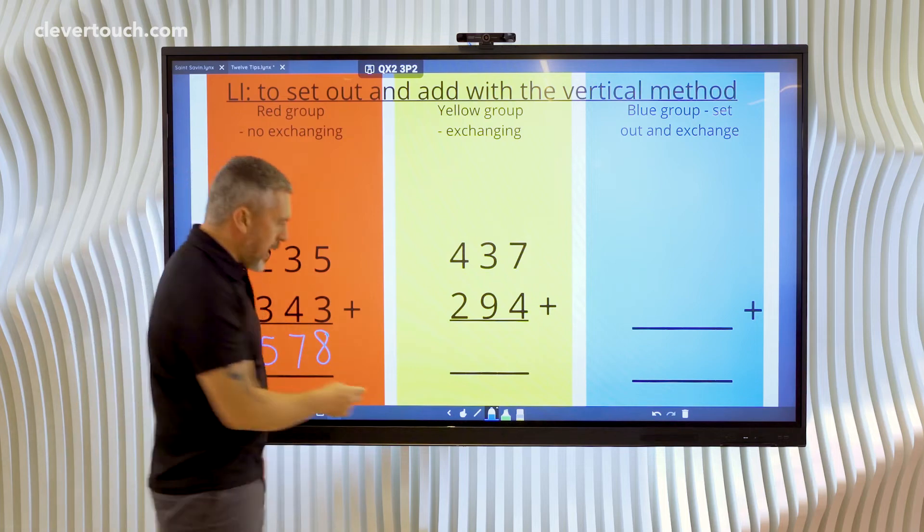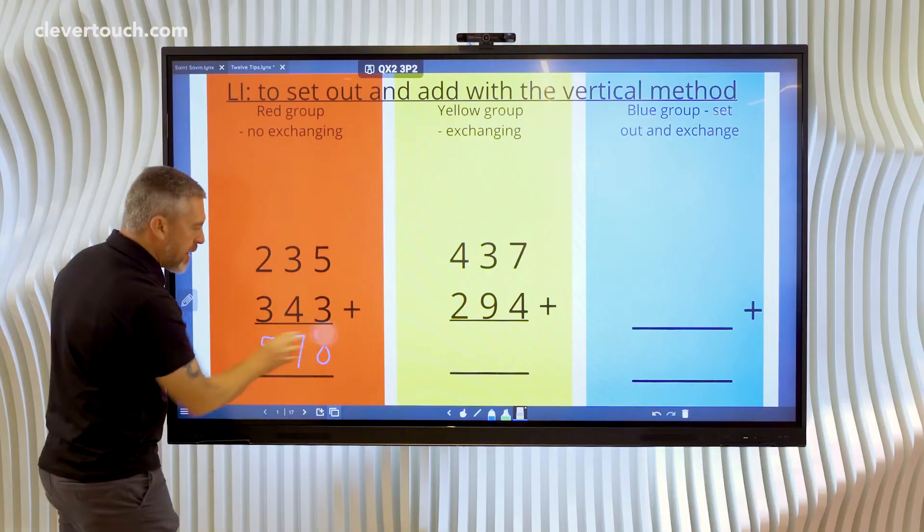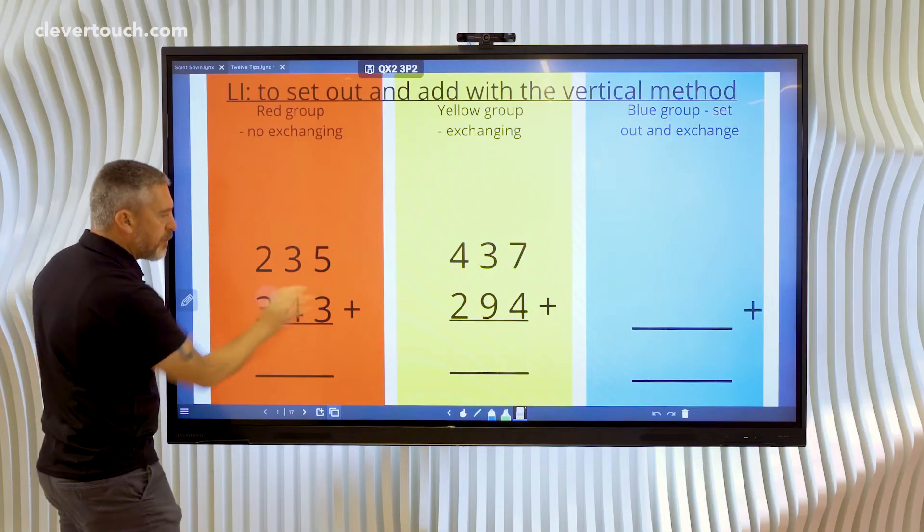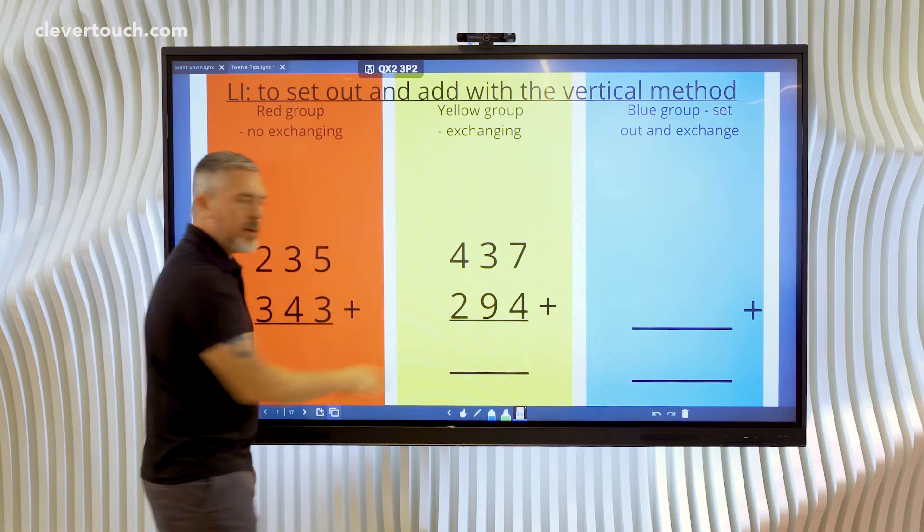And if I want someone else to come and have a go I can just use the eraser then to rub out what they've done. But everything in the background layer is protected.